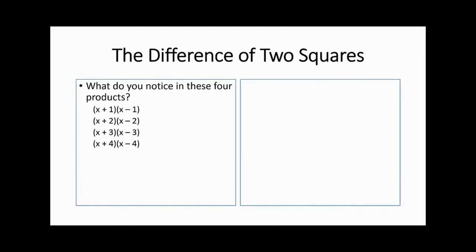The difference of two squares. What do you notice in these four products? The first gives x squared minus x plus x minus 1 — those two middle terms collapse to give x squared minus 1. The next gives x squared minus 4, then x squared minus 9. So you'd expect the same pattern: x squared minus 16.